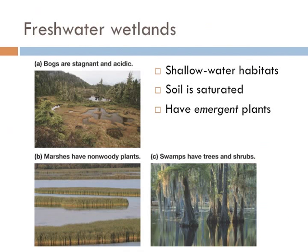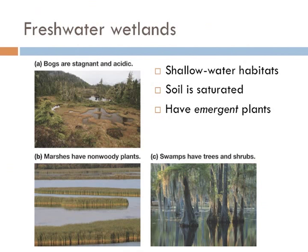Areas that are relatively shallow and really wet typically form freshwater wetlands, differentiated from lakes and ponds in that they have emergent plants — plants that come out of the water. There are three types of freshwater wetlands. Bogs are stagnant, meaning no water flows out, and they're typically acidic and usually really stinky. Marshes are predominated by non-woody plants, typically grasses, whereas swamps are predominated by emergent trees and shrubs, like the cypress swamps of Florida.